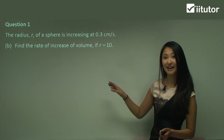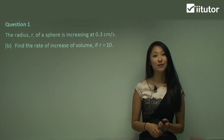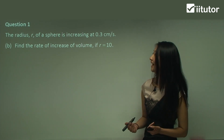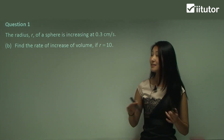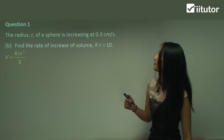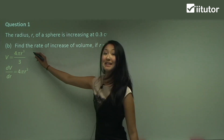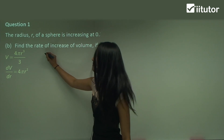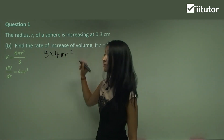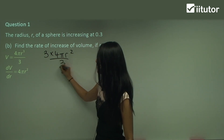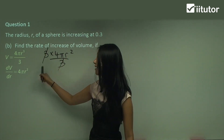Let's have a look at part b now. Here we want to find the rate of increase for volume. Remember for surface area how we wrote out the equation? We want to write out the equation for volume as well and find the derivative of that. Taking the 3 down gives 3 times 4πr squared on 3, and that cancels to give 4πr squared.